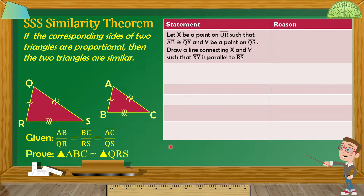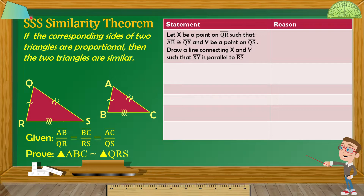Statement 1: We let X be a point on QR such that AB is congruent to QX, and Y be a point on QS. Draw a line connecting X and Y such that XY is parallel to RS. Familiar diba? Kamukha lang sya noong SAS Similarity Theorem, although mayroon lang tayong ibang statements dito na papalitan kasi it involves three sides.